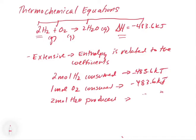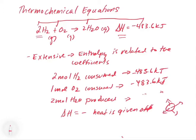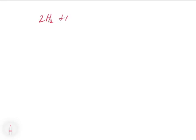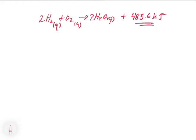Another way to think of this: when delta H is negative, heat is given off or released — the system is giving it off to the surroundings. So heat is basically a product of the reaction. We could write this as 2H₂ + O₂ → 2H₂O gas + 483.6 kilojoules as a product. This may help you see the 483.6 as part of the stoichiometry.